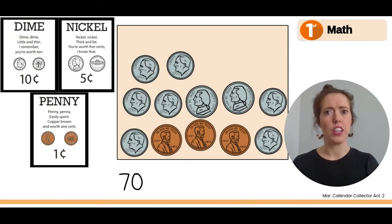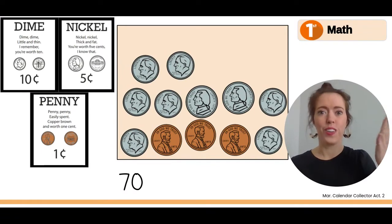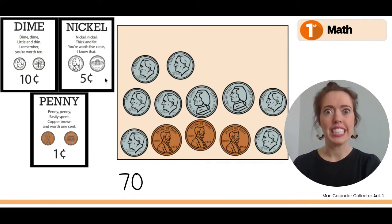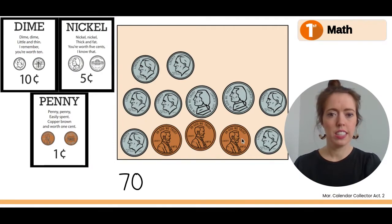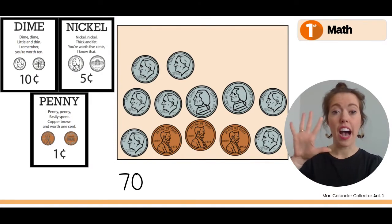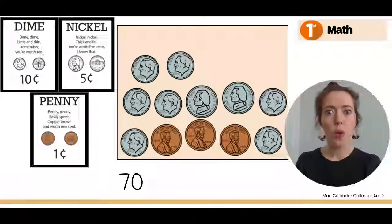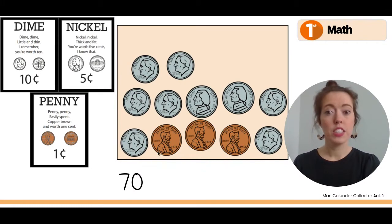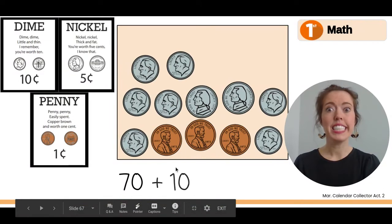So we have seventy cents worth of dimes. What's the next biggest value? The nickel or the penny? The nickel. How much is a nickel worth? Five cents. Good. So when we count nickels, we're going to count by fives. Do you see any nickels? Here's one. So that's five. And here's another one. Five plus five more is ten. Do you see any more?